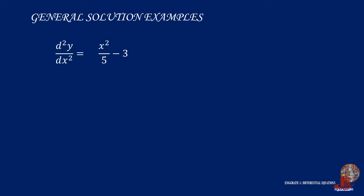For the second example, we have the second derivative of y with respect to x equal to x squared over 5 minus 3. To get the solution, the function must be integrated twice. Proceeding with the first integration, the integral of the second derivative of y with respect to x gives dy/dx.